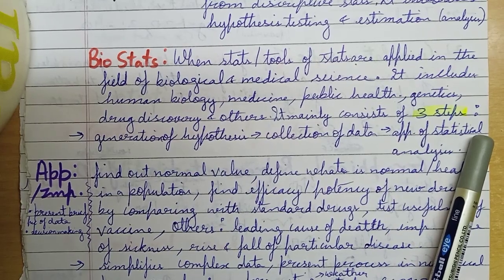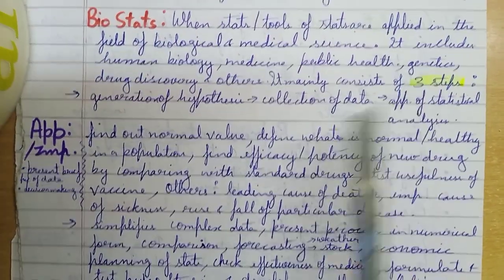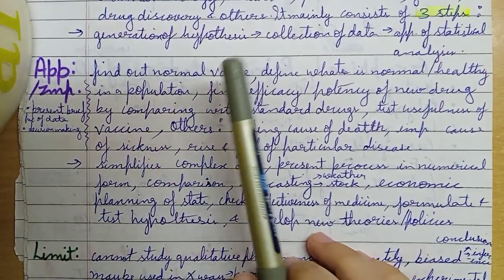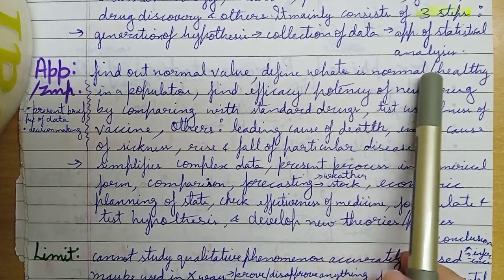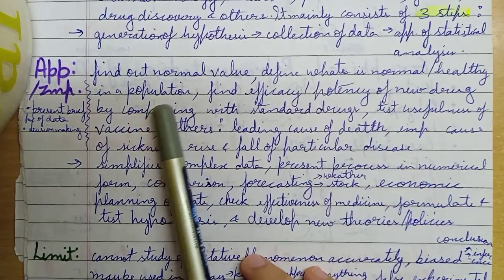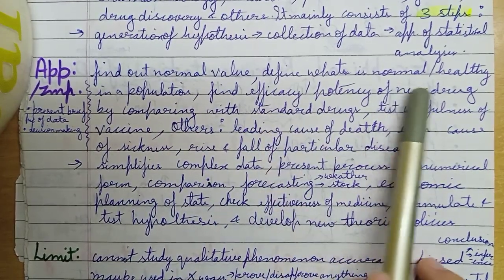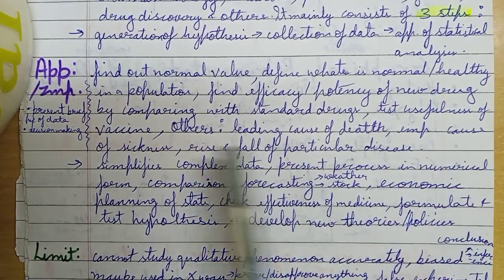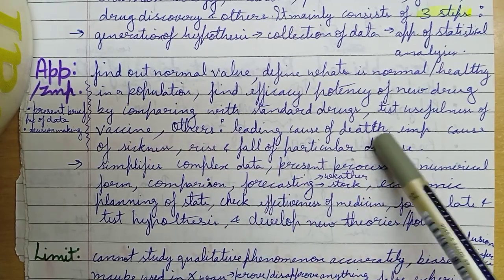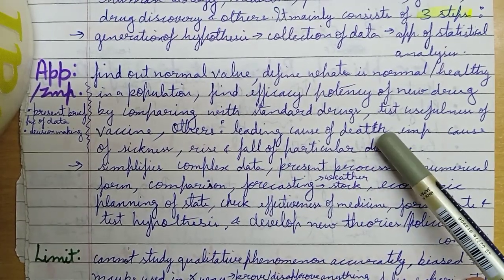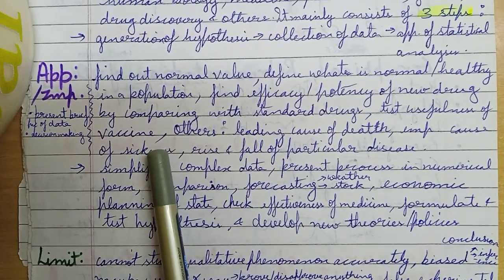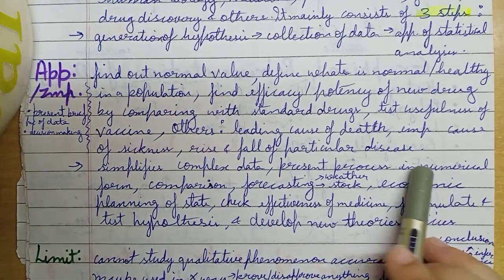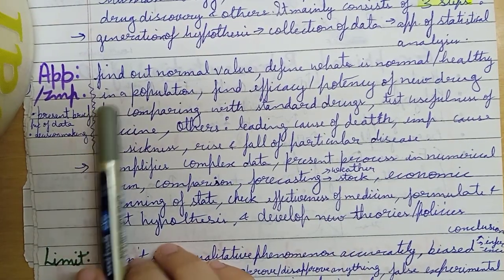Then applications or importance: we can find out the normal value, then we can define what is normal or healthy in a population. We can find out new drugs compared with standard drugs, then test the usefulness of vaccines. We can find out what is the leading cause of death and important causes. We can find out sickness and rise or fall of particular diseases.